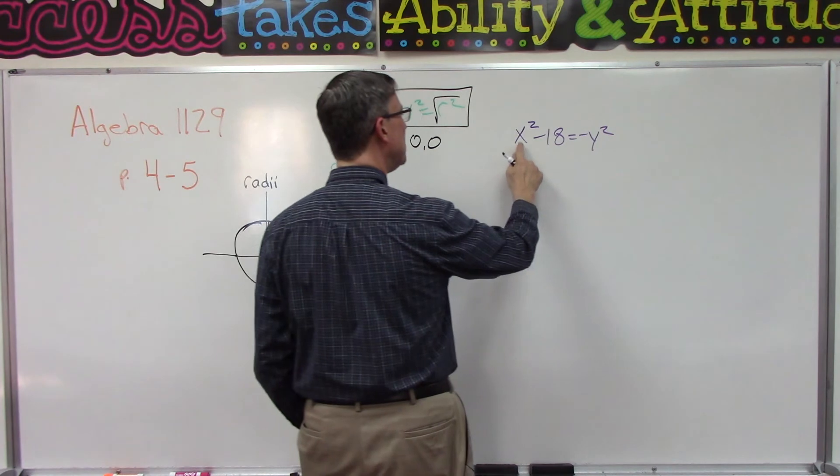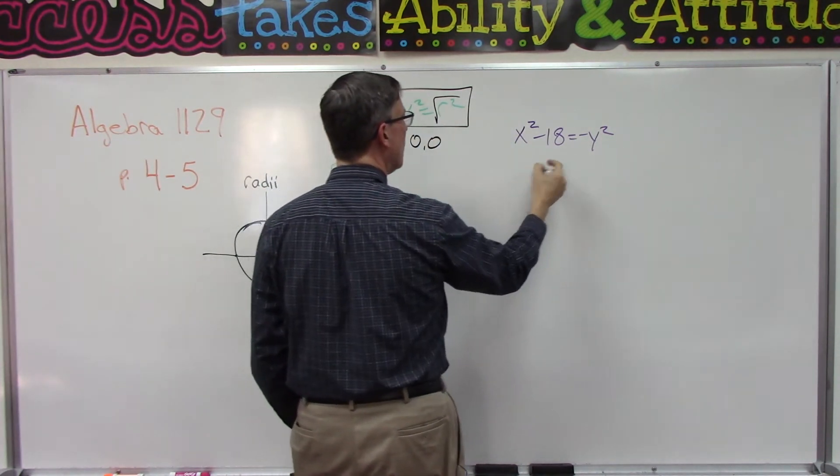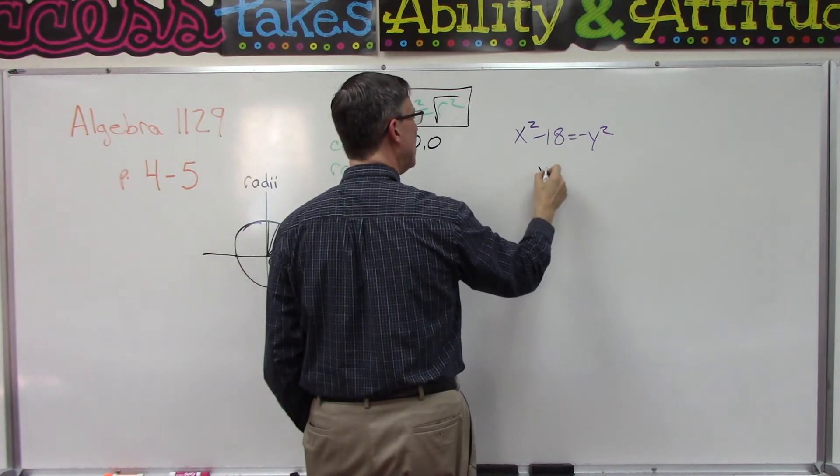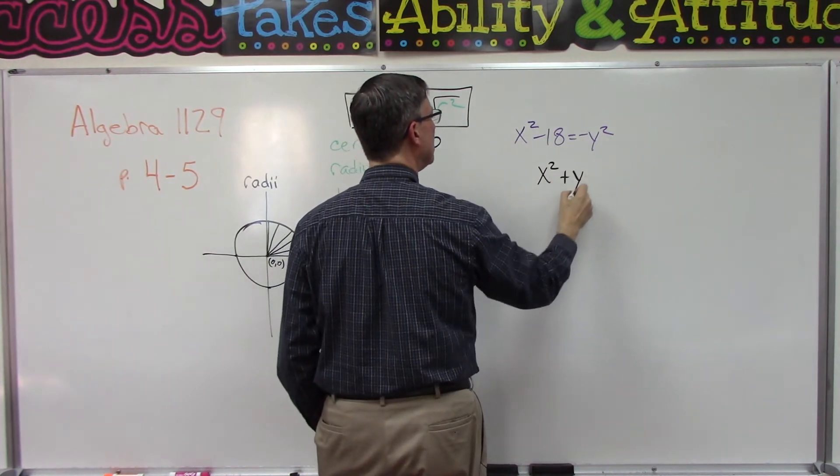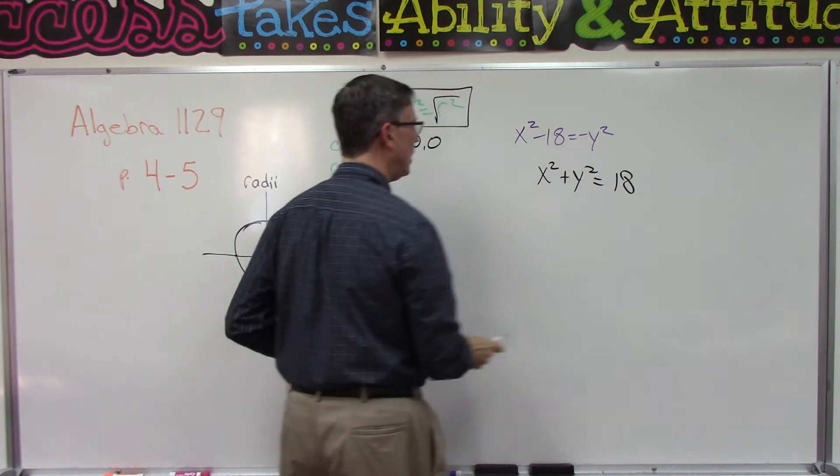Alright, let's do one from our homework and just get you started here. Notice we have an x squared and a y squared, that's a clue, but we don't have it in this form. So I want to bring the y squared to the left: x squared plus y squared, I'm going to take the 18 to the other side.